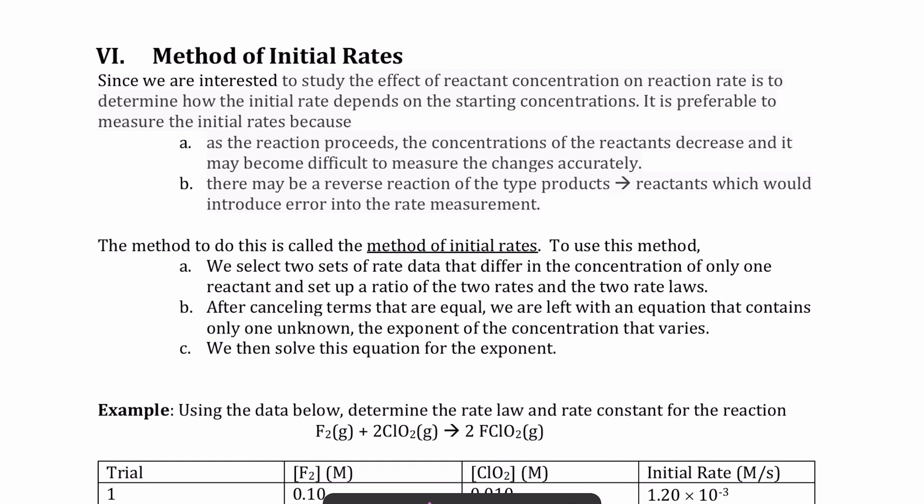Experimentally, we have to collect the data, which means determining the initial rate of the reaction at different reactant concentrations. We start with different values of reactant, measure the initial rate right away at the start of the reaction — as discussed in a prior lecture — and then use that data to figure out the rate constant and the order of each reactant.